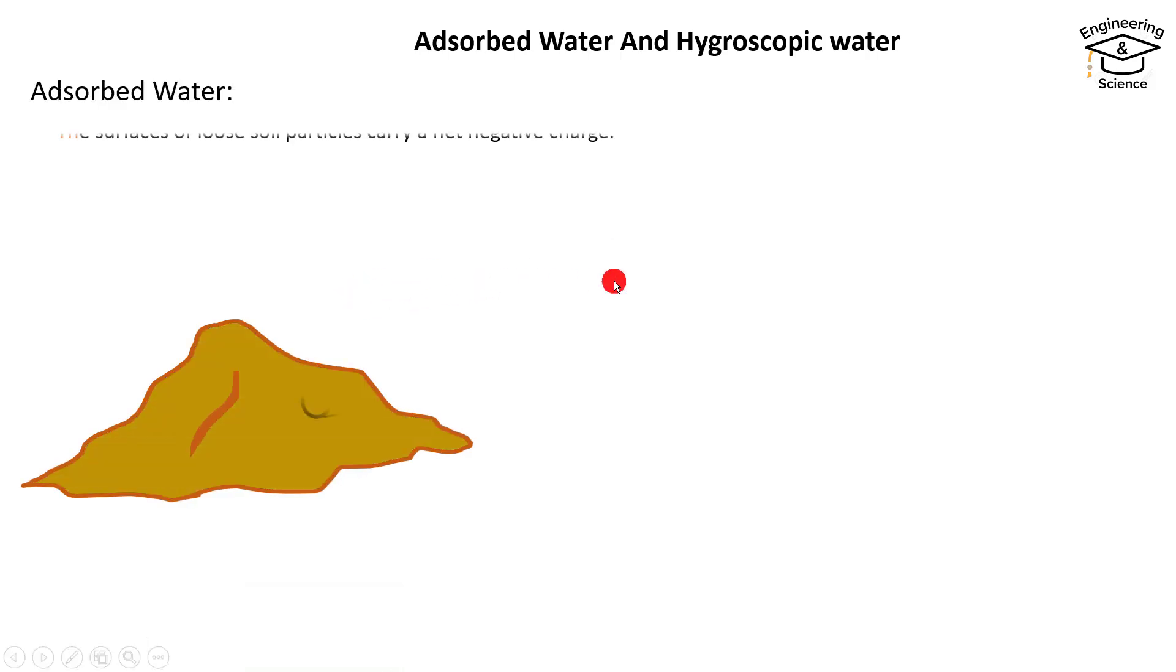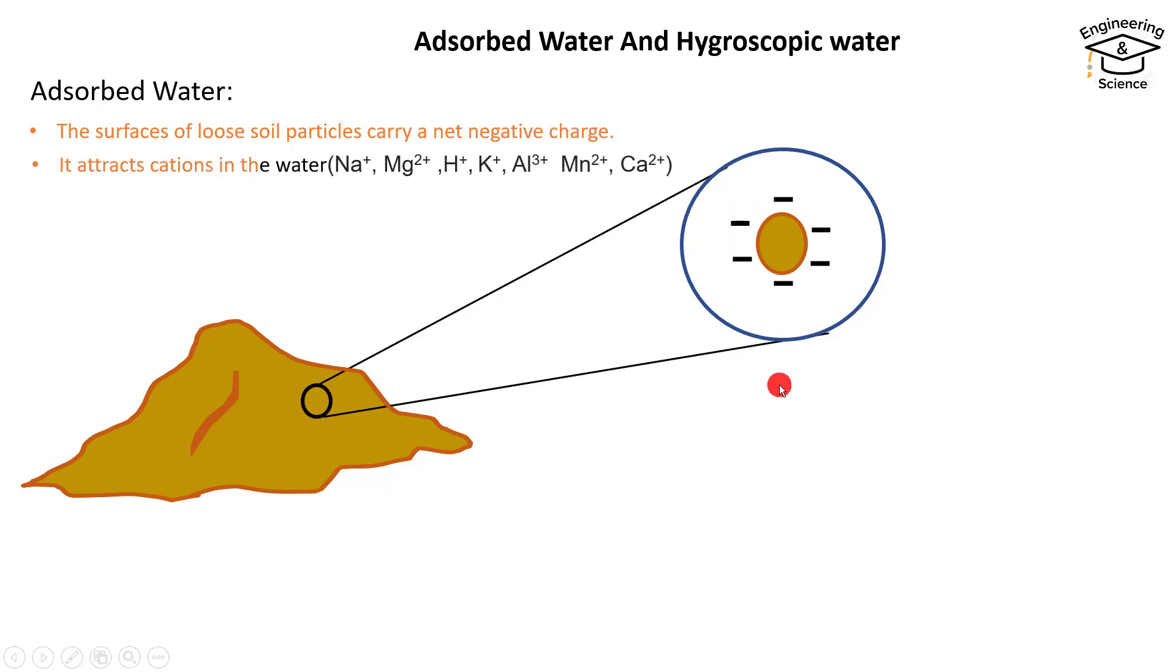For example, we have this soil sample. We know that the surface of the soil particles carry a net negative charge. Also, water contains cations which have a positive charge such as sodium, manganese, hydrogen, and so on. These two different charges create an electric field which has a constant force called electrostatic force.